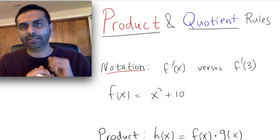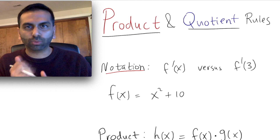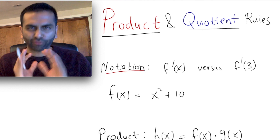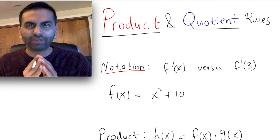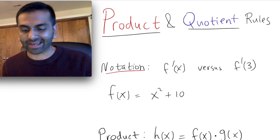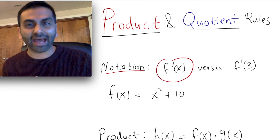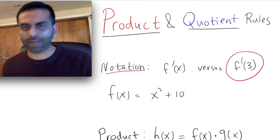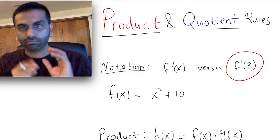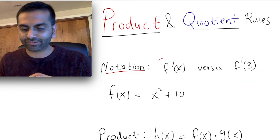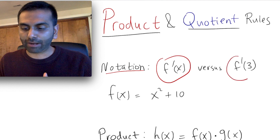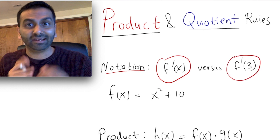In this video, we're going to talk about the product and the quotient rule and how to apply them. Before that, I just want to make a brief comment on notation. If you were to see something like f prime of x versus f prime of 3, what's the difference? Well, f prime of x is an equation and f prime of 3 is a number.